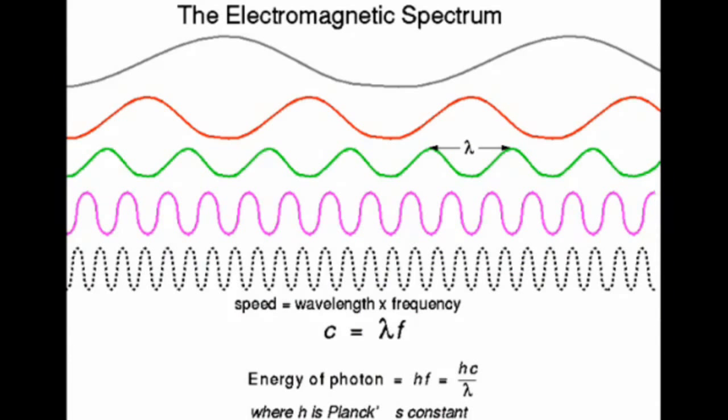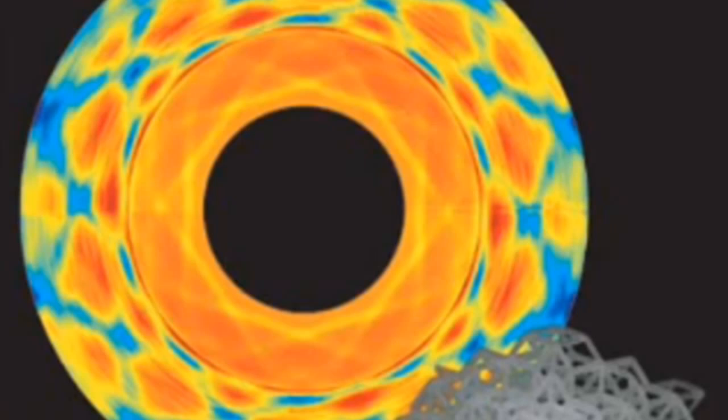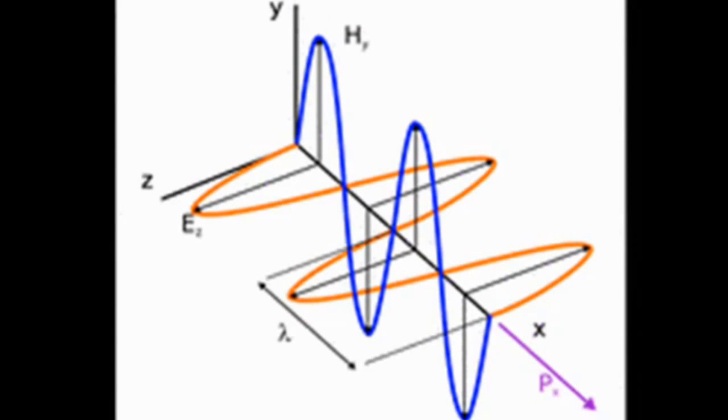Different frequencies of light interact with matter in many different ways depending on the atomic structure of the material and its electromagnetic properties, also depending on the frequency of the light that's interacting with it.